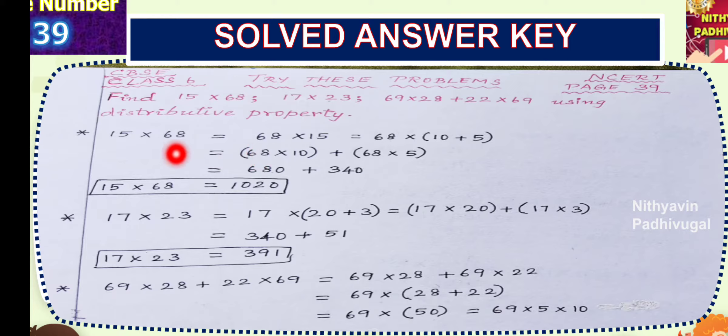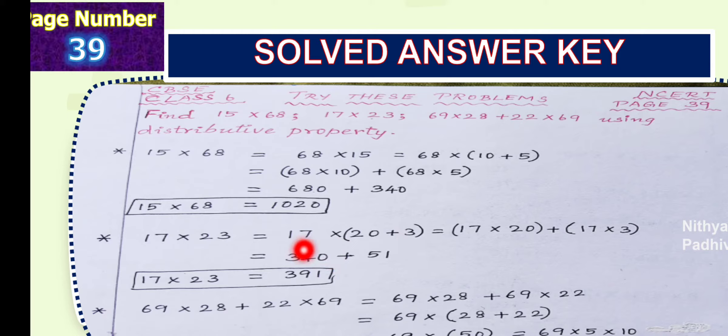Here we have 17 multiplied by 23 is equal to 17 times 23 split into sum of two numbers 20 and 3. So, 17 multiplied by 23. This is of the form distribution of multiplication over addition. So, we have to distribute 17 to 20 and 3. 17 into 20 plus 17 into 3. 17 into 20, for the 0 in the end, put 0. 17 into 2 is equal to 34.